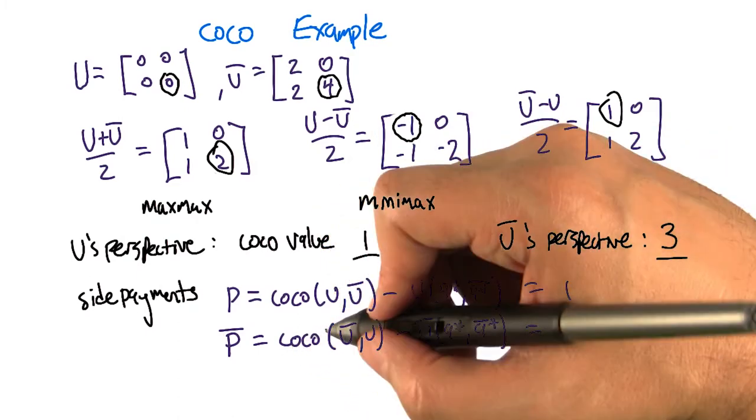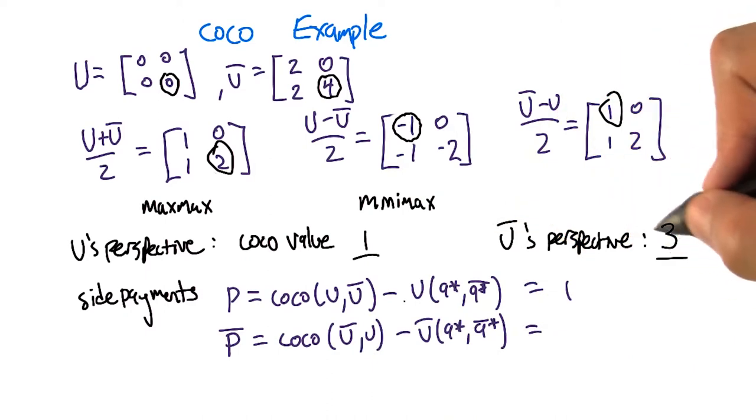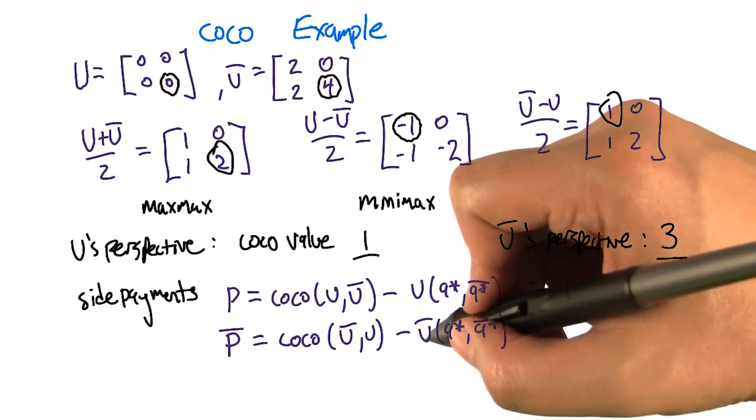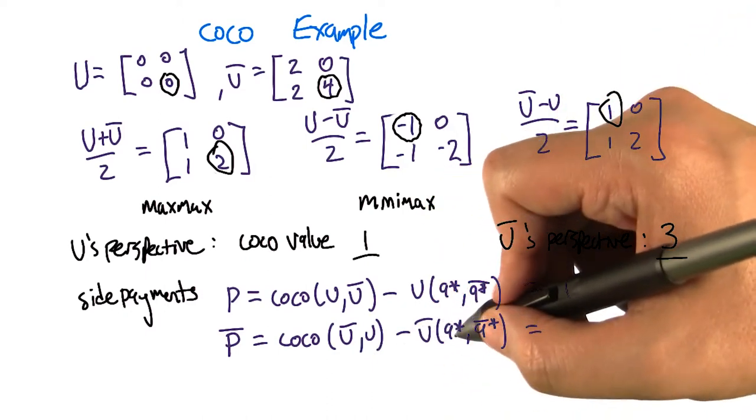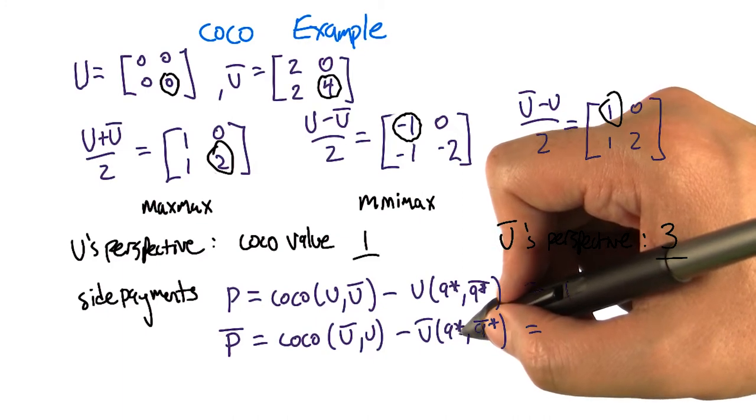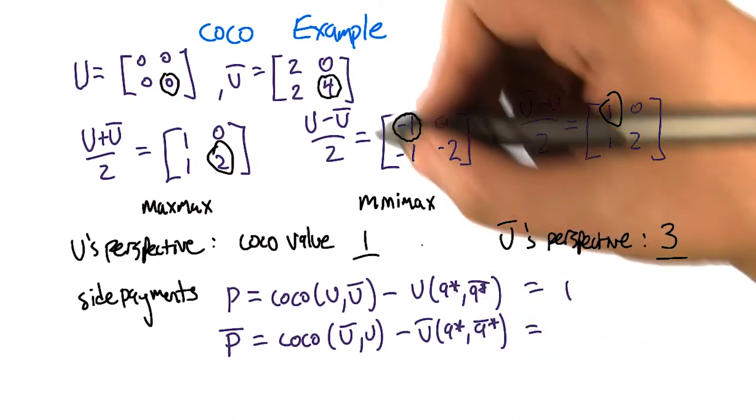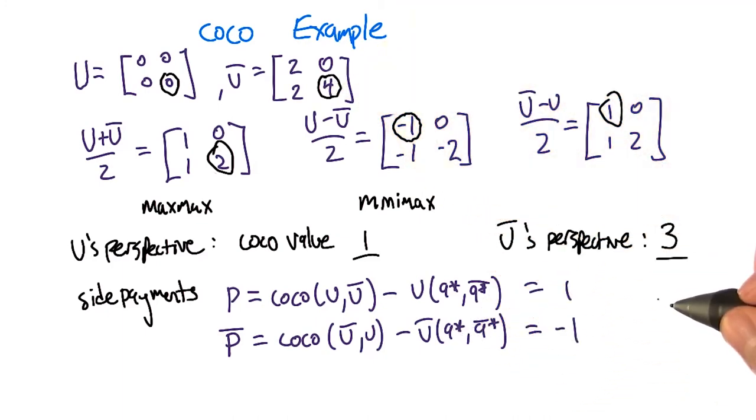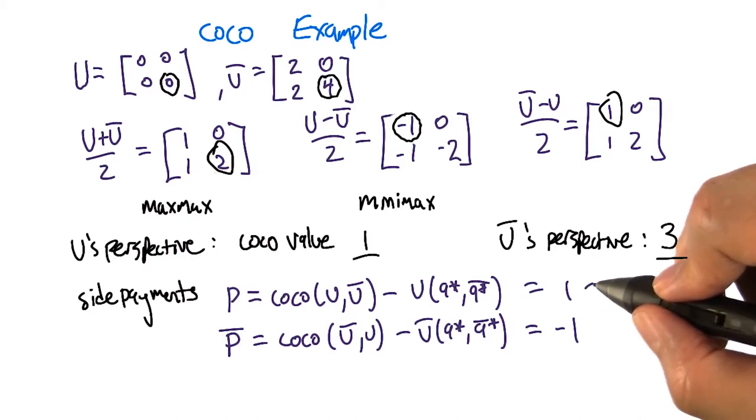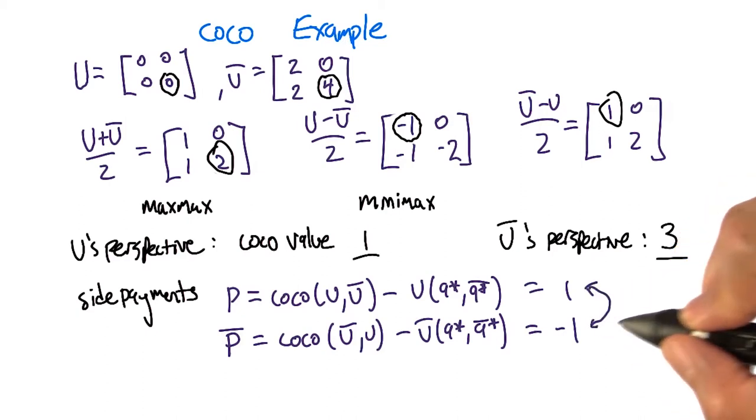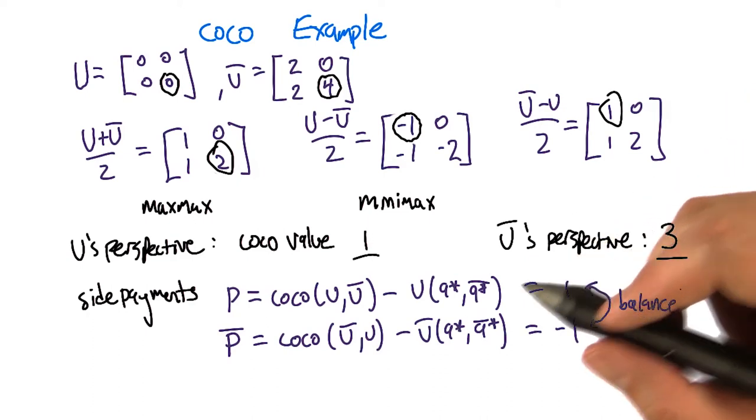Whereas from U-bar's perspective, the cocoa value is 3 minus the payment that U-bar gets for playing the utility-maximizing action, which is 4. So we get minus 1. And that makes sense because it better be the case that they are opposite and equal. You have to transfer, and now you've answered my question. Who gets to transfer money from one to the other? That's right. So the U player is going to get one, and the U-bar player is going to give one, and that's the one banana exchange.